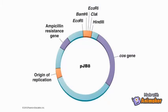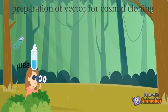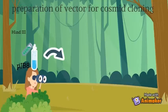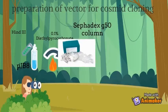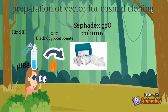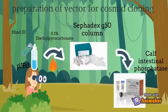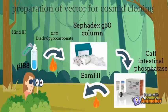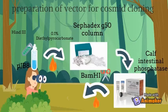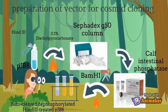Here is an image of the basic structure of the pJB8 cosmid vector. pJB8 was digested with HindIII and terminated by incubating at 70°C with 0.1% diethylpyrocarbonate. It was then spun through a Sephadex G50 column equilibrated with water. The linear plasmid was dephosphorylated with calf intestinal phosphatase and the enzyme inactivated at 70°C. The vector DNA was cut by BamHI. The BamHI-cleaved dephosphorylated HindIII-treated pJB8 is used for cloning.